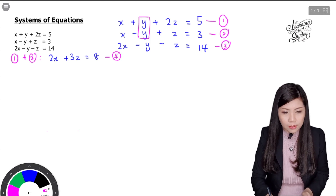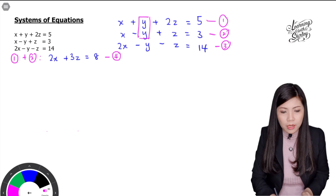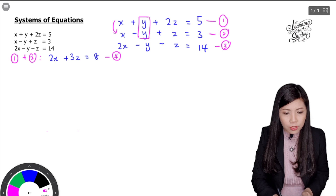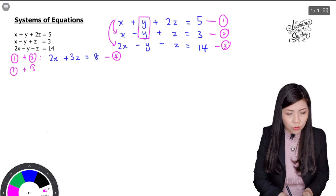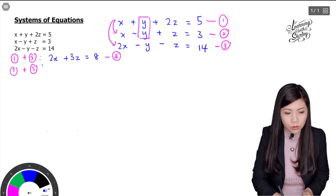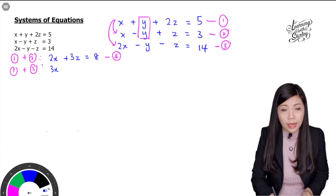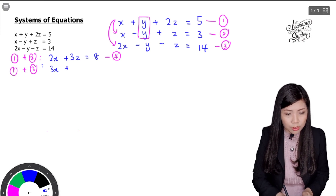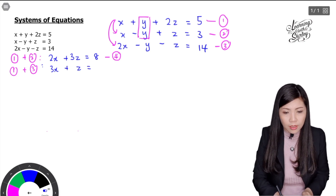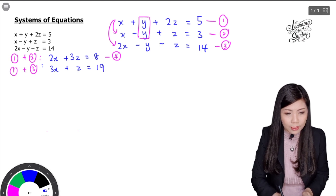Next, we'll use equation 1 and equation 3 to eliminate y again. Equation 1 plus equation 3: x plus 2x is 3x, positive y plus negative y gives 0 so y is eliminated, and 2z plus negative z is positive z. Then 5 plus 14 equals 19. So this gives us 3x plus z equals 19, and this is equation 5.